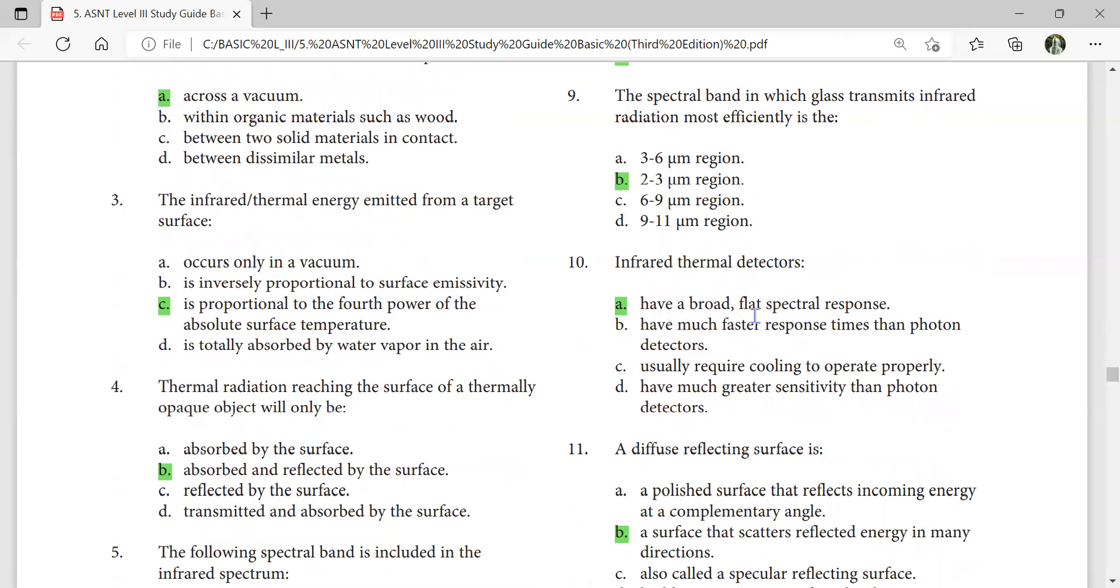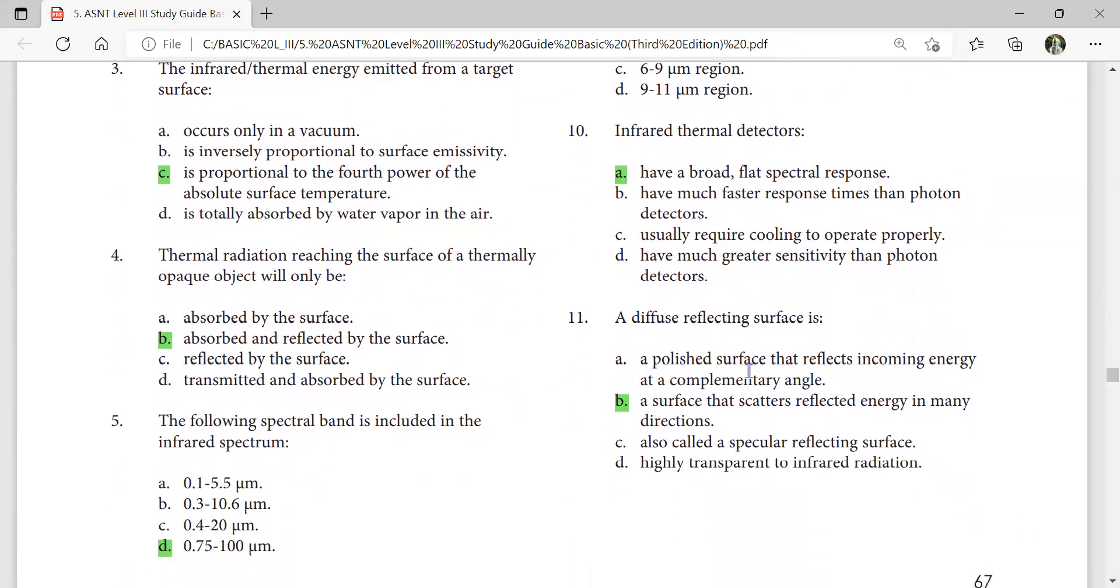Thermal radiation reaching the surface of a thermally opaque surface object will be absorbed and reflected by the surface. A diffused reflecting surface is a surface that scatters reflected energy in many directions. The following spectral band is included in the infrared spectrum.